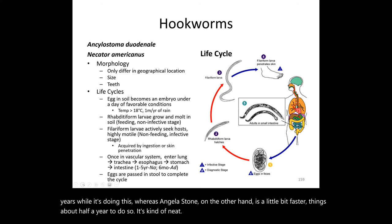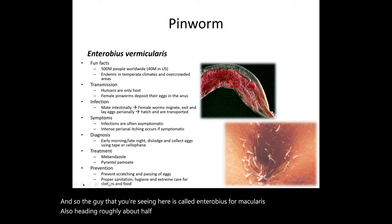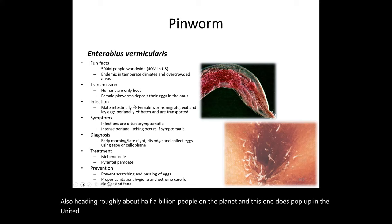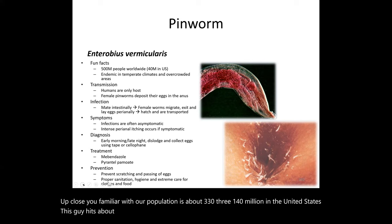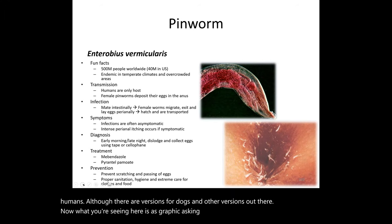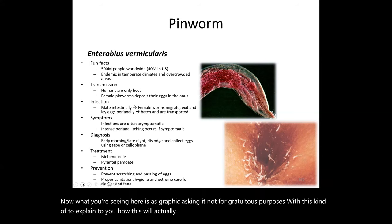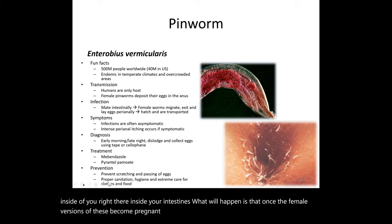One we don't see in the lab but is very entertaining is the pinworm — Enterobius vermicularis — infecting roughly half a billion people on the planet. It pops up in the United States quite often; with a population of about 330–340 million, this worm infects about 10% of Americans. It's specific to humans, though there are versions for dogs and other animals.